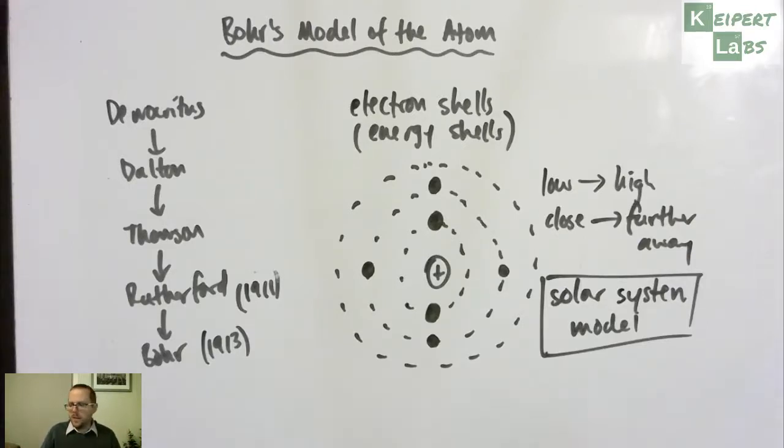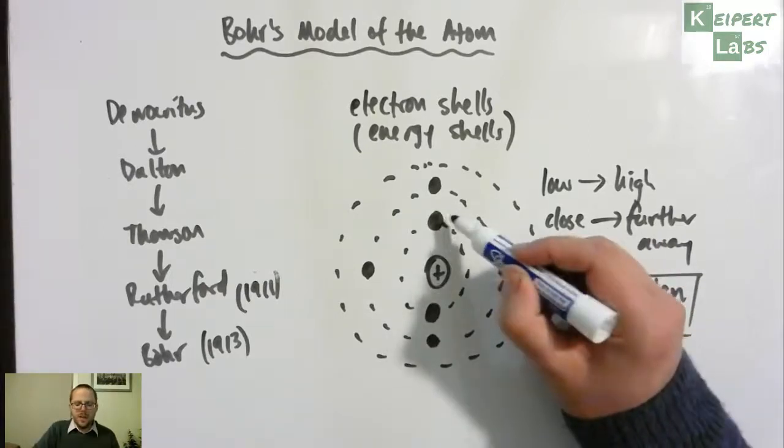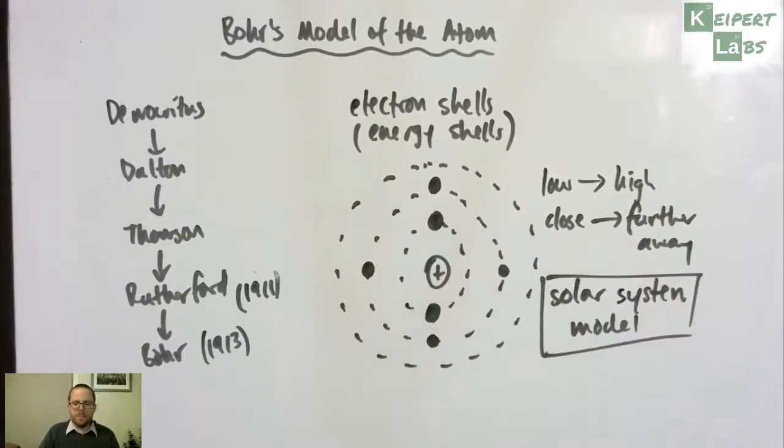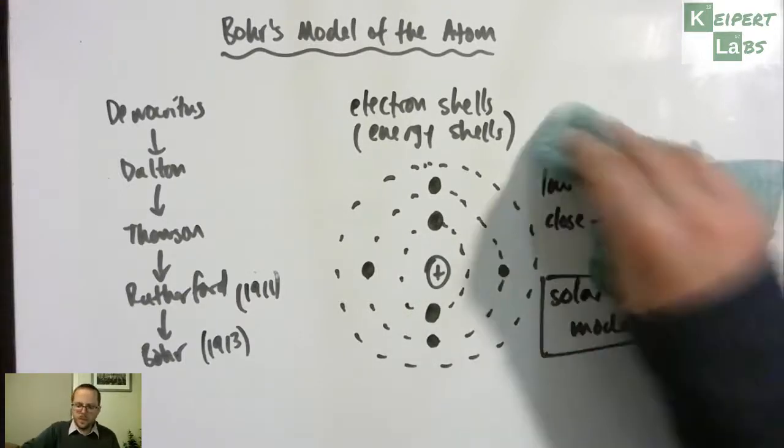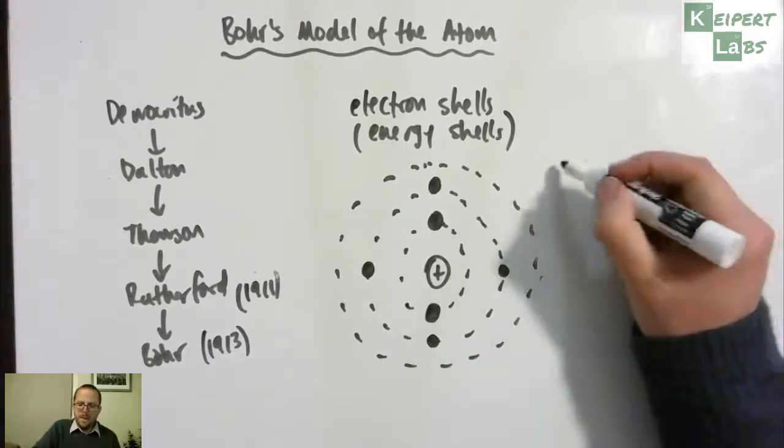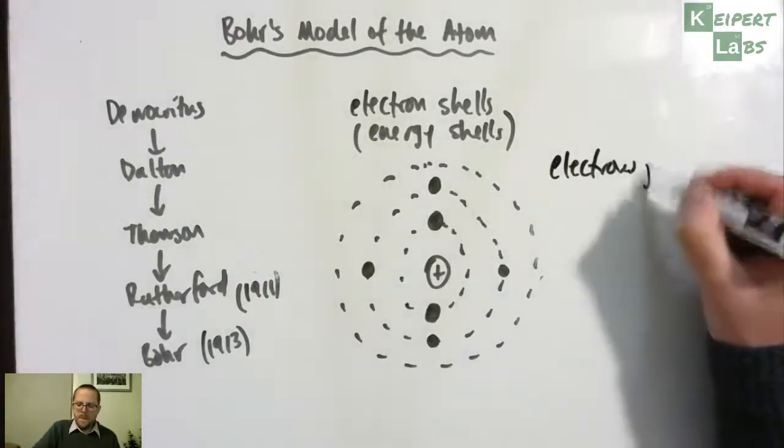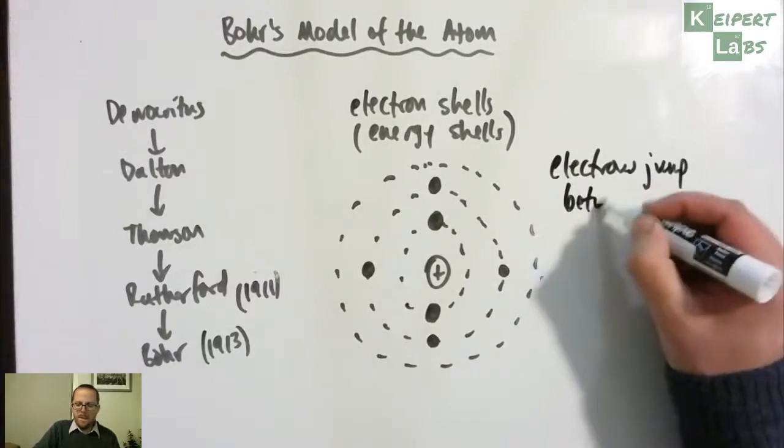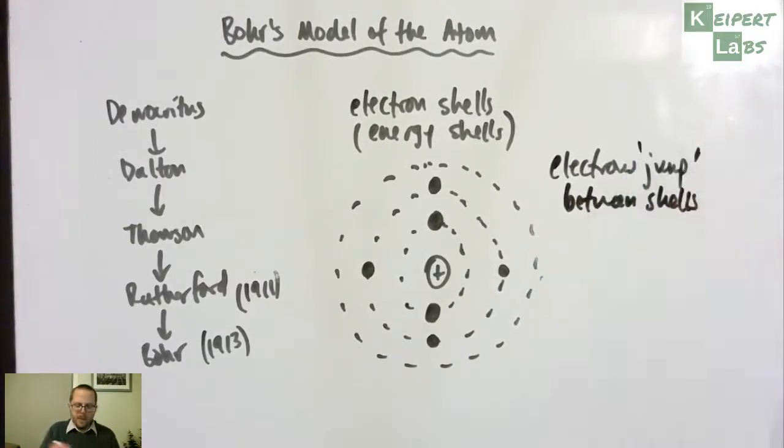Now, the way that he then tried to make sense of the fact that coloured light could be given off is that he proposed that electrons can jump between shells.